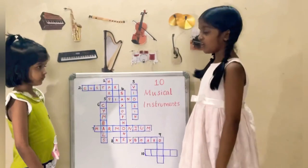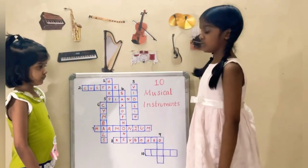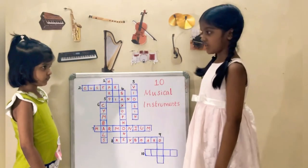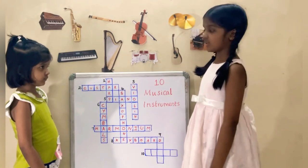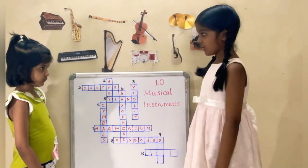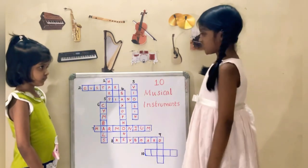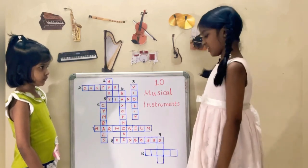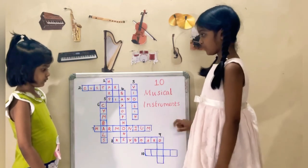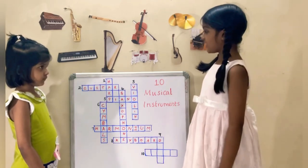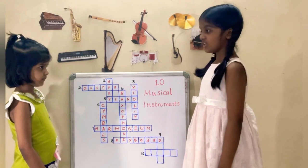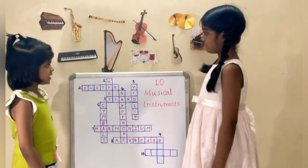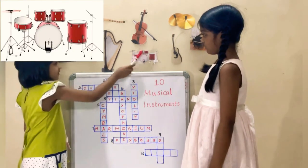The clue for the 9th musical instrument is: this instrument is the oldest instrument in the world. It is a percussion instrument. It starts with the letter D. Can you find the name of the instrument? Yes, the name of the instrument is drums.